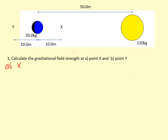At X, the yellow mass is going to pull with a force towards the right at point X. We're going to have to use Newton's law of gravitation: g = GM/r².